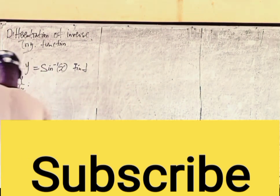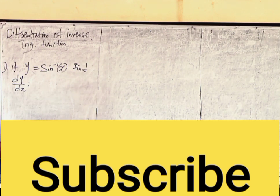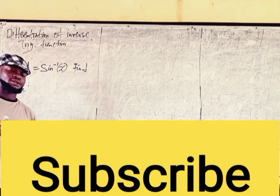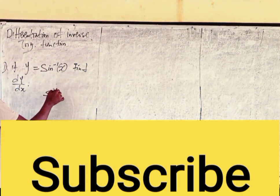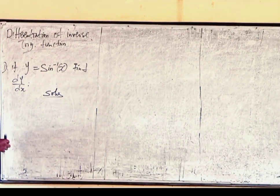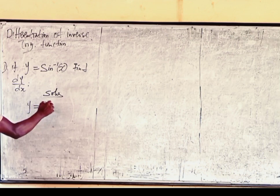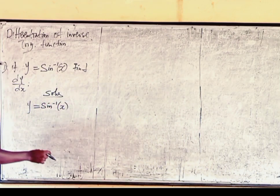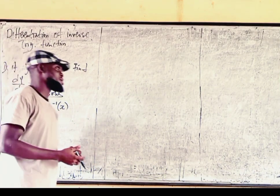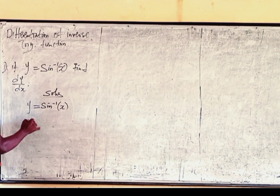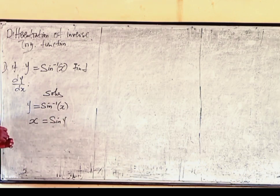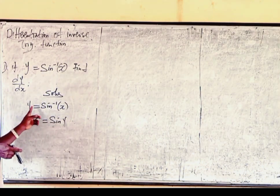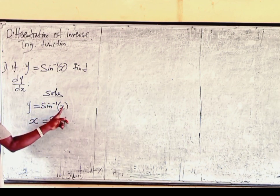The first question is: if y is equal to sin inverse of x, we will find dy over dx. The solution will be — if we assume y is equal to sin inverse of x, we can re-state this as x is equal to sin y. Because if I am telling you that y is equal to sin inverse of x, I am indirectly telling you that x is equal to sin y.